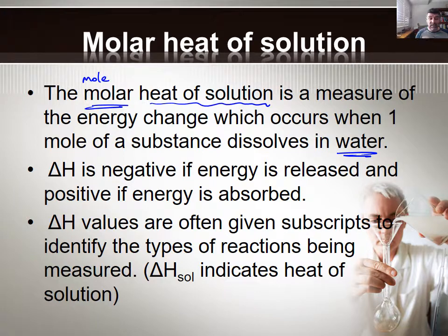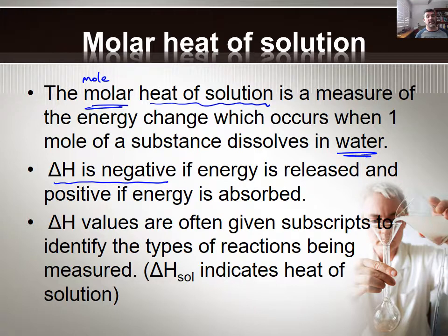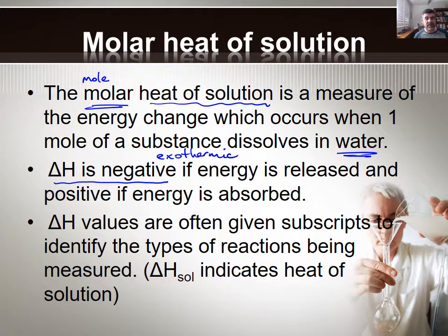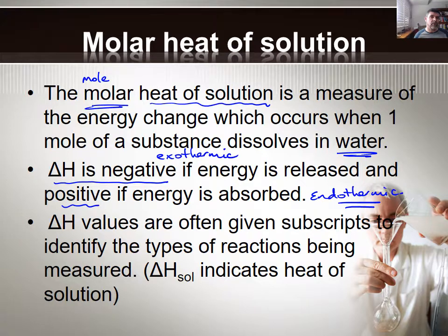Now there are two possibilities. One is that the reaction will release heat to the surroundings, which will create a negative delta H value and will mean that the reaction can be regarded as being exothermic. However, it's also possible that the energy could be absorbed from the surroundings, and therefore the delta H value will be a positive value — and of course that will be an endothermic dissolution. The delta H value often comes with a number of subscripts just to identify the particular type of reaction that we are measuring.